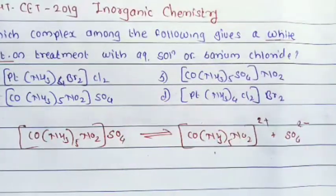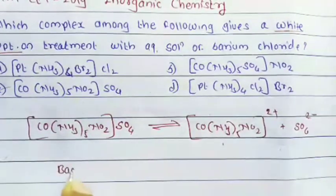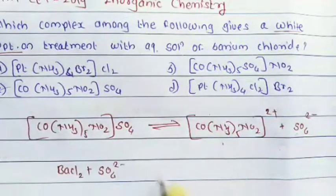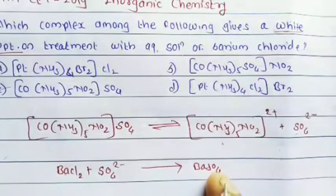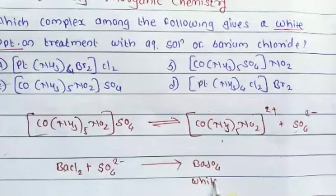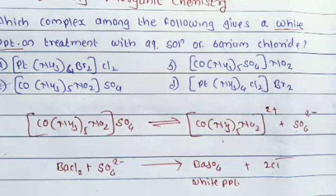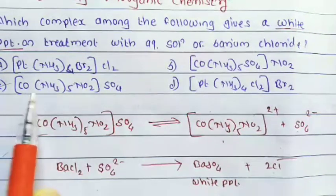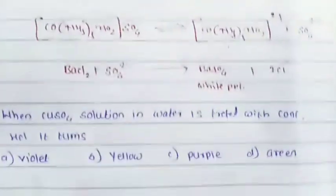The SO₄²⁻ ion reacts with barium chloride (BaCl₂) to form BaSO₄, which is the white precipitate. So [Co(NH₃)₅NO₂]SO₄ treated with barium chloride gives a white precipitate of BaSO₄.